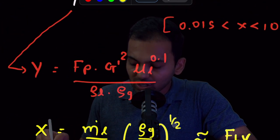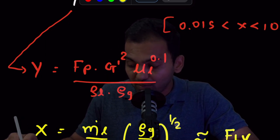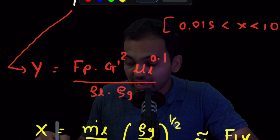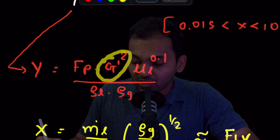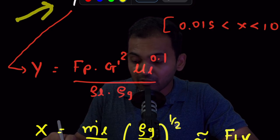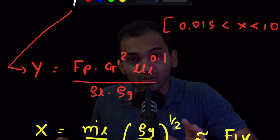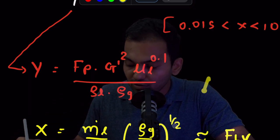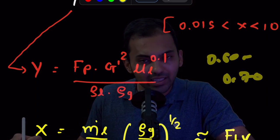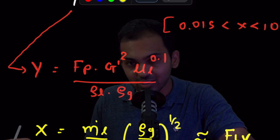Coming back to the main Y equation, the only unknown property remaining is G' — mass gas velocity — because mass velocity equals mass flow rate divided by area, and area is what we don't yet know. Solving this equation gives us G', which is the flooding mass velocity (maximum). Since I need actual mass velocity, I consider 60 to 70 percent of the flooding velocity — that is the range we should consider for the actual velocity calculation.